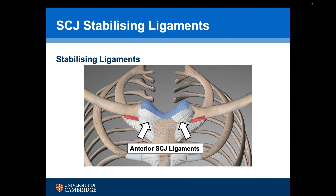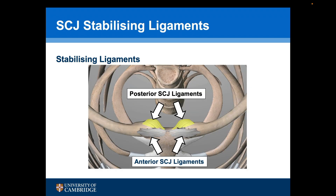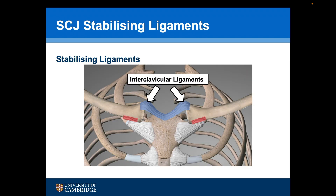The stabilising ligaments for the sternoclavicular joint are the anterior sternoclavicular joint ligaments and the posterior ligaments. These can be seen more easily from an axial view. The interclavicular ligaments prevent superior translation, and the costoclavicular ligaments also prevent superior translation but are also involved in anterior and posterior instability.